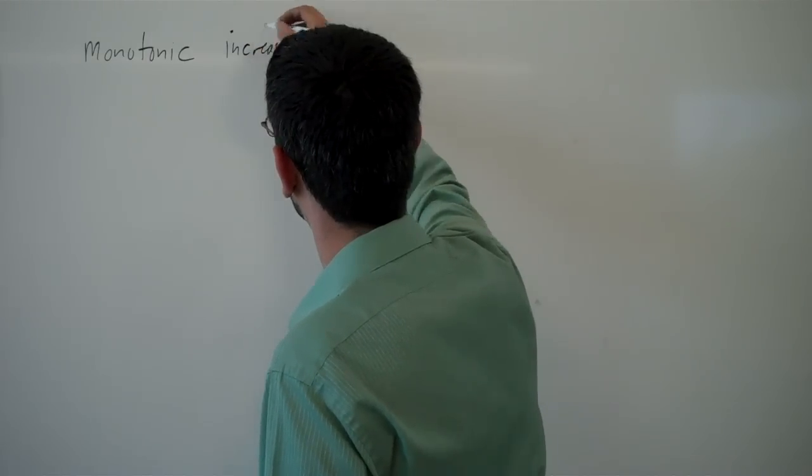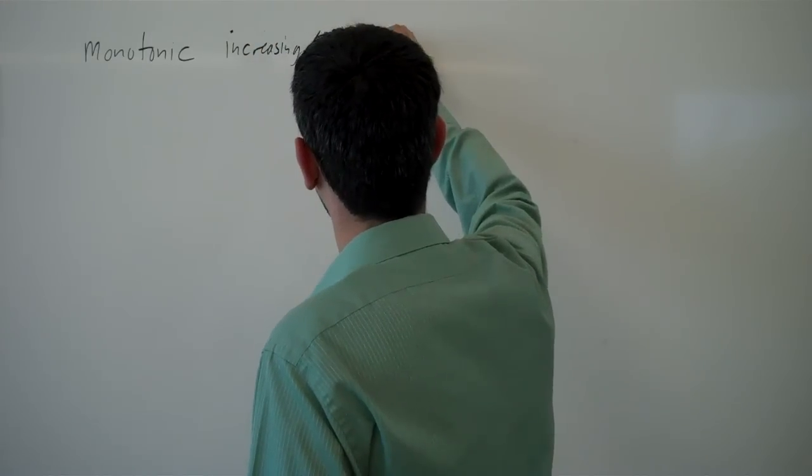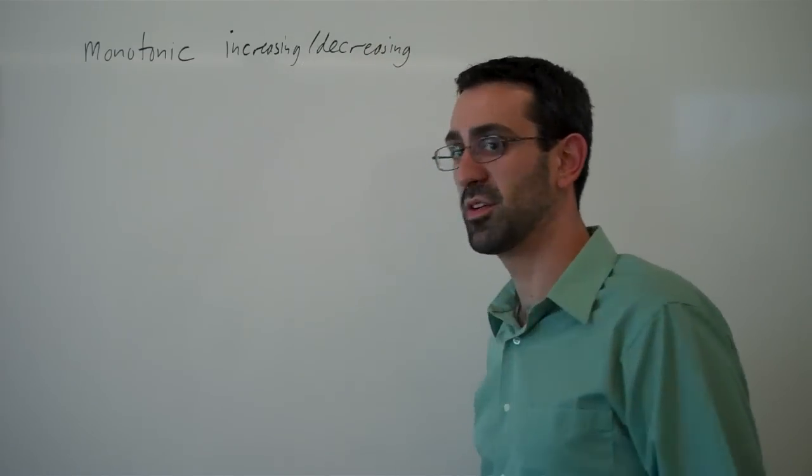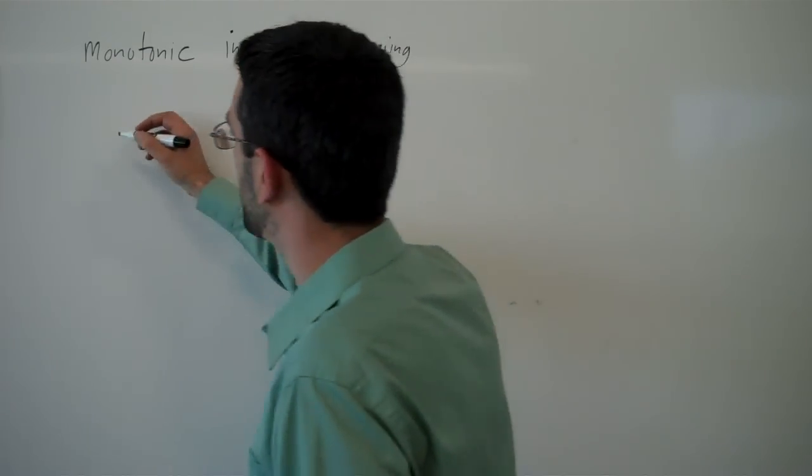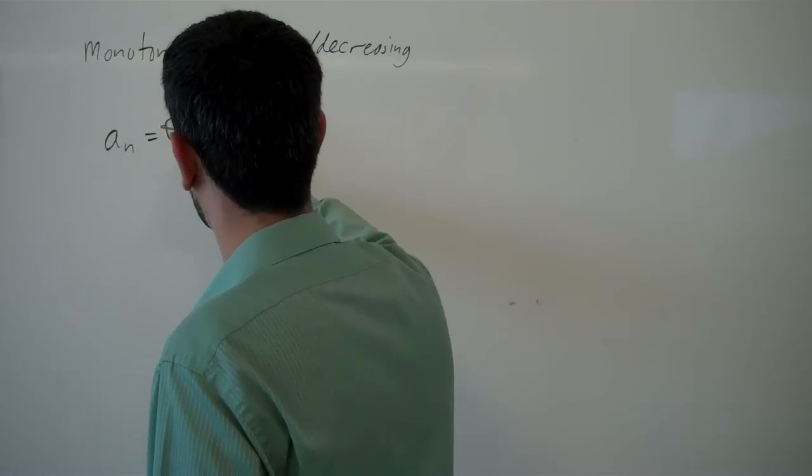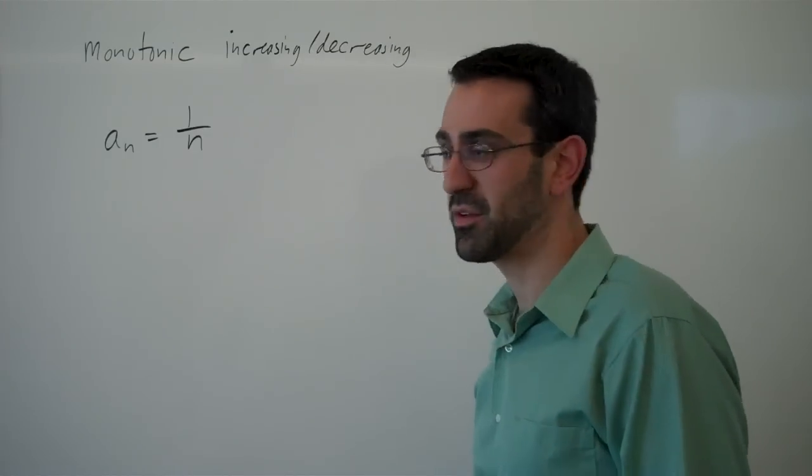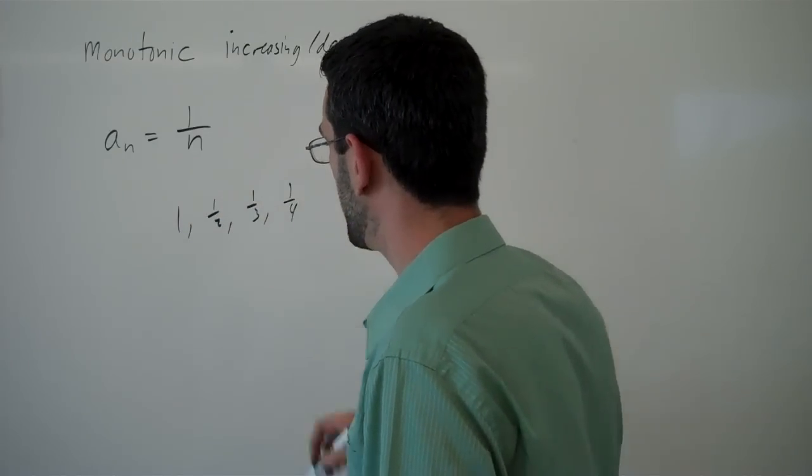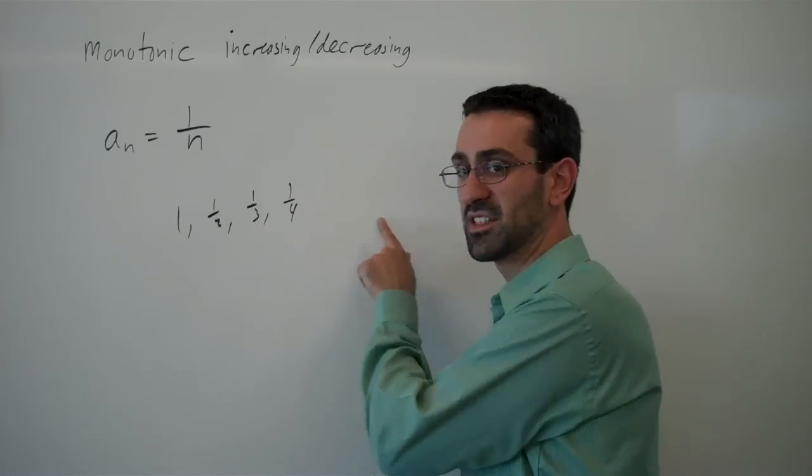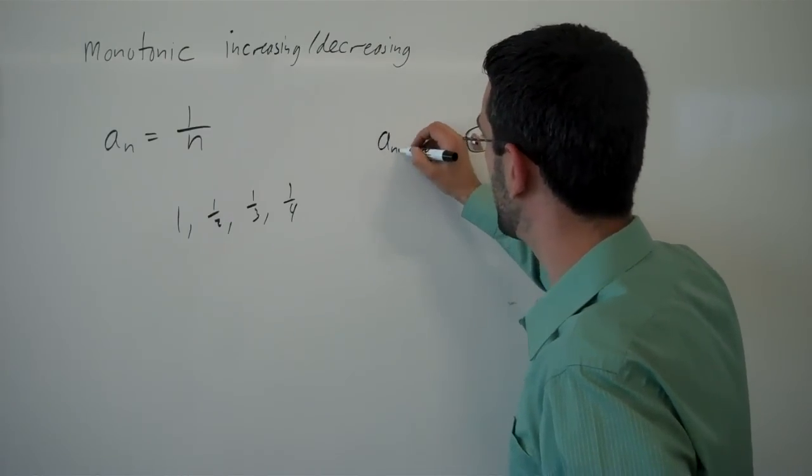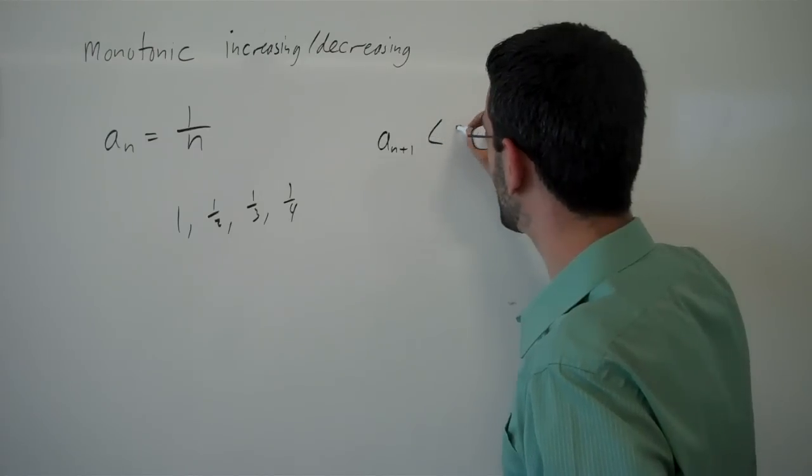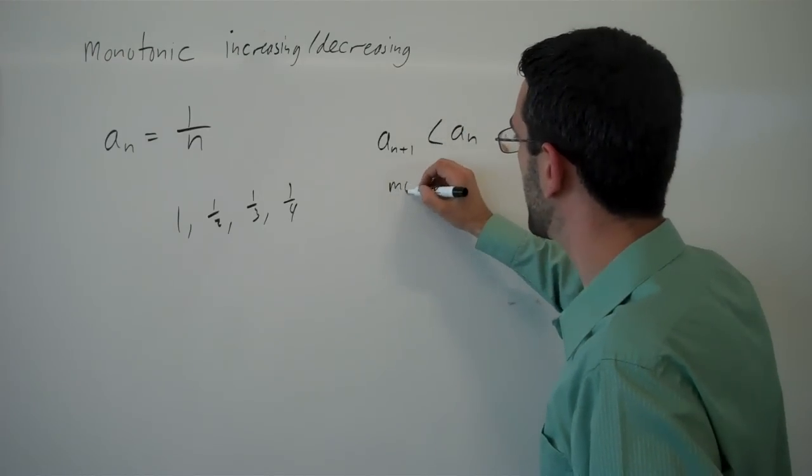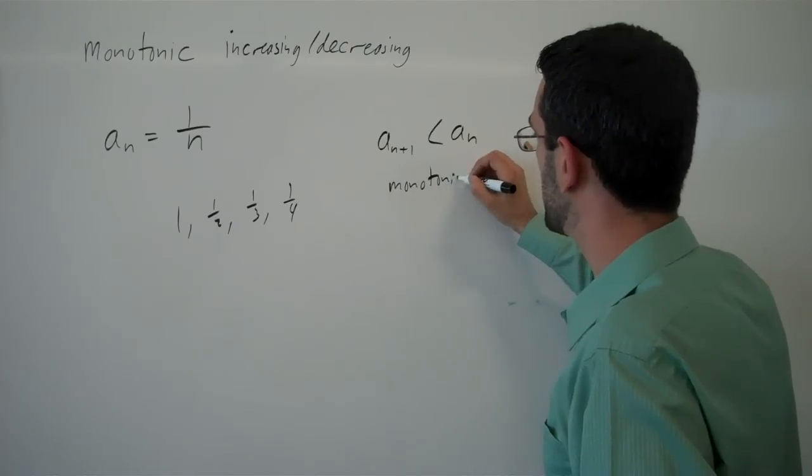So monotonic increasing or decreasing means that the function is always increasing or decreasing. And so for example, if I looked at this sequence and we start listing out a few terms: one, a half, a third, a fourth, you'll notice that these are always getting smaller, right? In other words, a_n+1 is always less than a_n. And so this we would call monotonic decreasing.